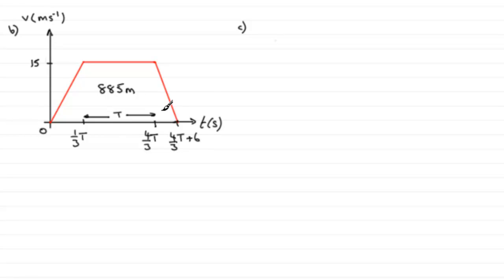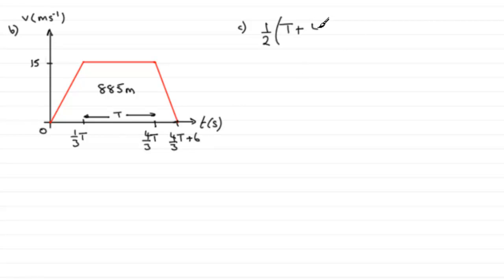The area of the trapezium will be a half multiplied by the sum of the parallel sides. We've got this top side here, which is going to be t. And then we add the length of this side, which is going to be 4 thirds t plus 6. We multiply this by the distance between the parallel sides, which is 15. And that equals 885.